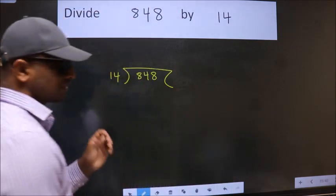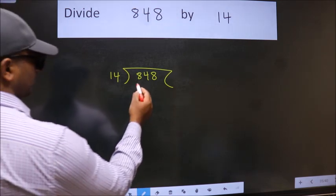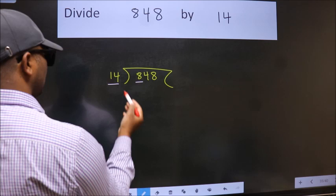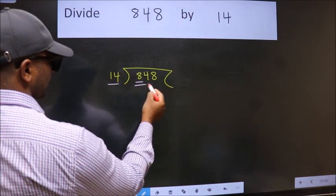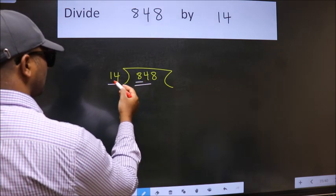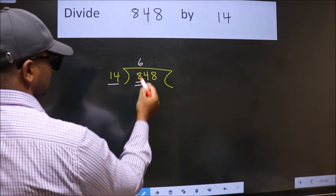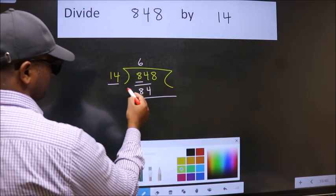This is your step 1. Next, here we have 8, here 14. 8 is smaller than 14, so we should take two numbers: 84. When do we get 84 in 14 table? 14 times 6 is 84. Now we should subtract, we get 0.